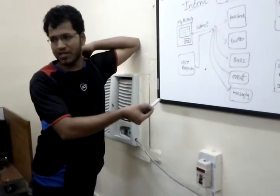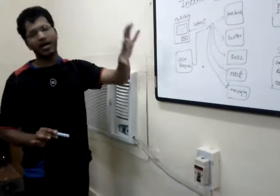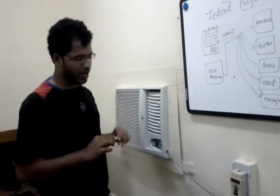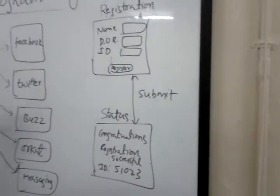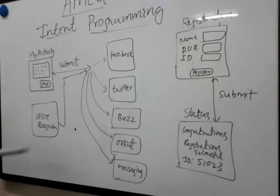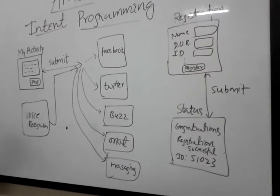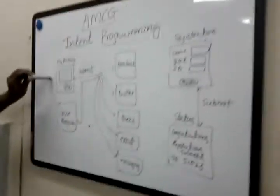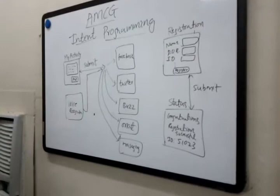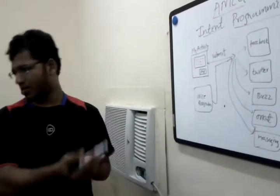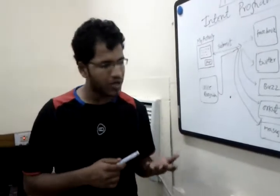I will explain how to do this using intents. And one more problem statement: I don't know where exactly my Facebook application exists, what Java classes I should use to implement this task. I have no idea about the source code implementations of Facebook, Twitter, Buzz, ARCUT, or even standard messaging. But all these applications exist in my mobile, and by using my own application I wanted to transmit data — post whatever I type or give as voice data — either as a Facebook status, tweet, buzz comment, ARCUT scrap, or send as a text message to a friend.